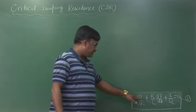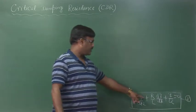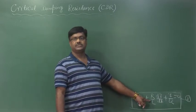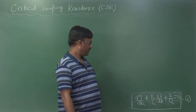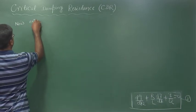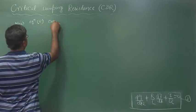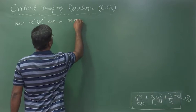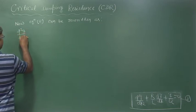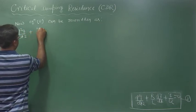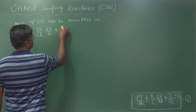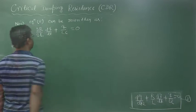Let us rewrite this equation and solve by inserting two terms. We multiply by 2 here and divide by 2 here so that it will not hamper the value of the equation. Equation 8 can be rewritten as d²Q/dt² + (2R/2L)(dQ/dt) + Q/LC = 0.